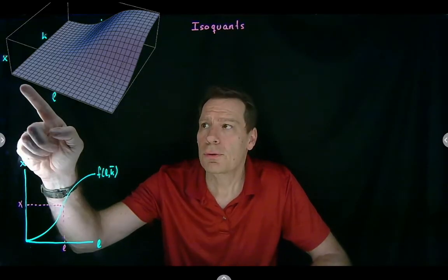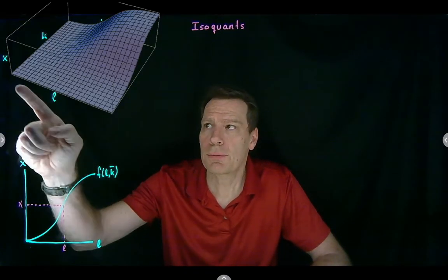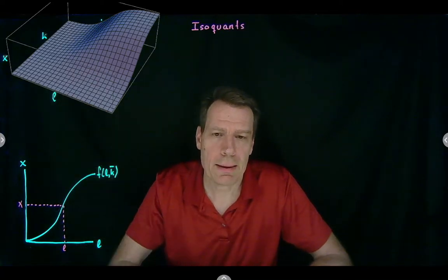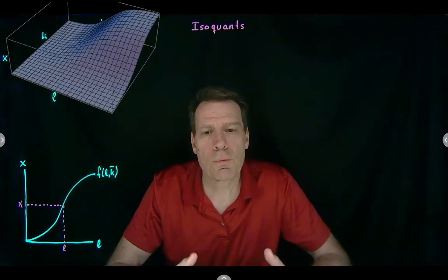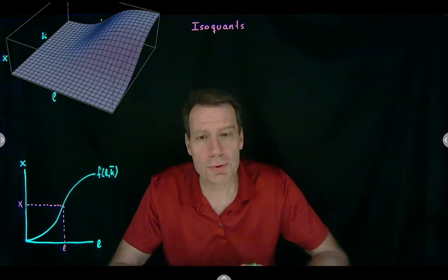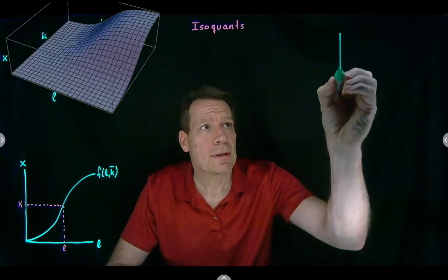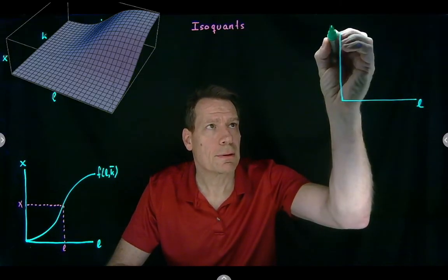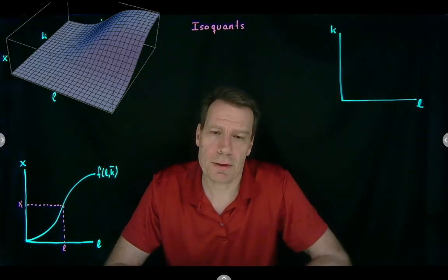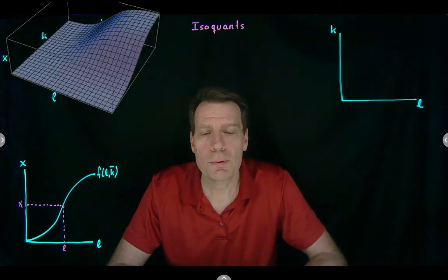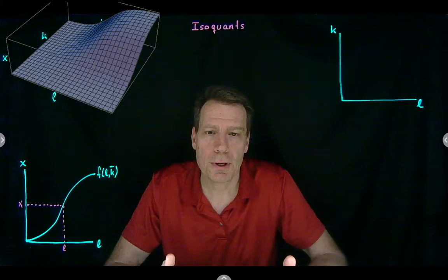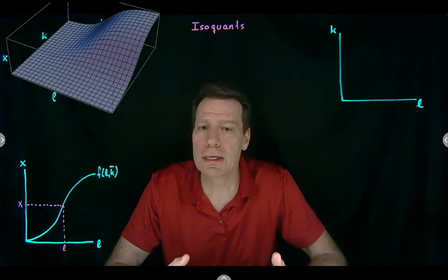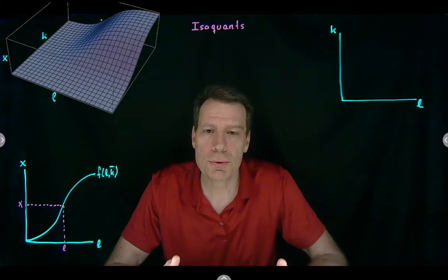But when we now have two inputs that we can vary — both labor and capital — we don't just have one way of producing any given level of output. We can use many different bundles of inputs, bundles of labor and capital, to produce the same level of output. So when we ask how much it is going to cost to produce a certain level of output, we first have to figure out what input bundle we are actually going to use to do it.